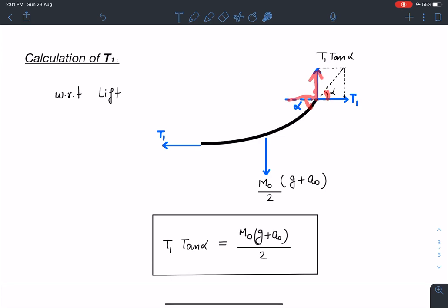So this vertical component, I can write T1 tan alpha or total tension will be T1 times root of 1 plus tan square alpha. This is the total tension at the support and vertical component, however, is T1 tan alpha. So this T1 tan alpha is going to be total effective weight divided by 2, which is going to be m0 g plus a0 by 2. So here we are getting the expression of T1, but we are introducing one extra unknown as well.